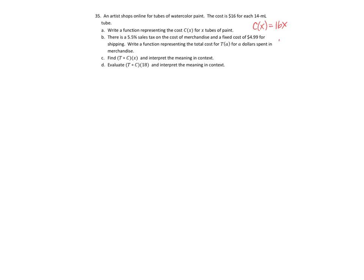So we'll have T(a) equals, okay, the 5.5% sales tax, so that's 105.5% that we have to spend because we already bought the thing. So we'll say 1.055a plus we also need to pay our fixed cost of $4.99. Okay, there's my function.